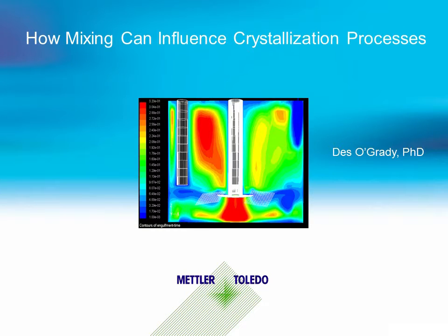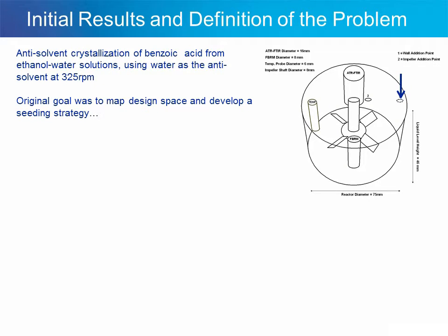In this short video I would like to introduce one of the ways that mixing can influence crystallization processes. For this study, an anti-solvent crystallization process was characterized — specifically the crystallization of benzoic acid from ethanol-water solutions using water as the anti-solvent. One of the original goals of this study was to map a design space and develop a seeding strategy for this crystallization process. The crystallizer configuration is shown on the right-hand side, and we can see we're studying this crystallization using a number of analytical techniques, including React-IR and particle track.